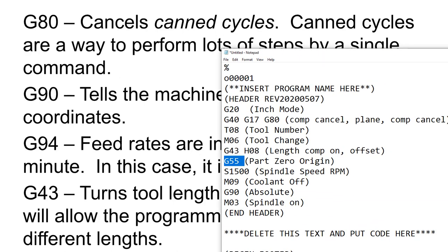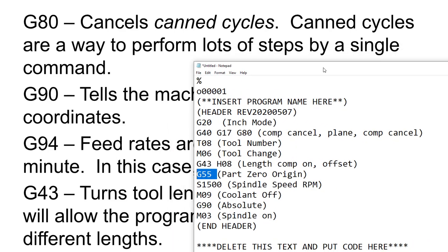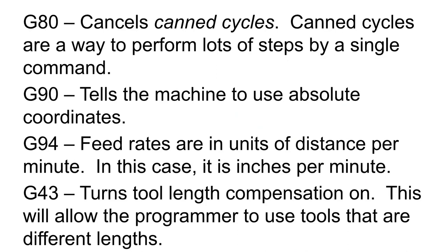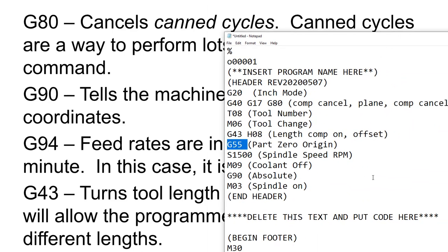G80 will cancel any canned cycles that might have been active. A canned cycle is like a peck drilling operation where instead of saying Z up and Z down over and over, you tell the machine how deep you want the hole and how deep to go with each peck. This clears that out, so if we accidentally give an XY location without G01 and the last program had done drilling, it won't just start drilling unexpectedly.